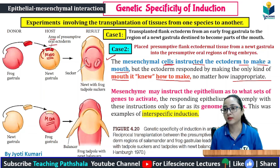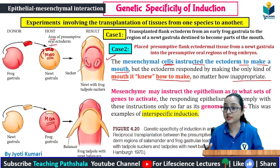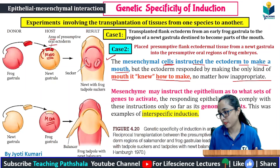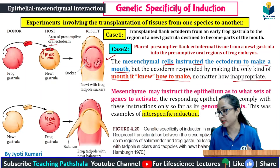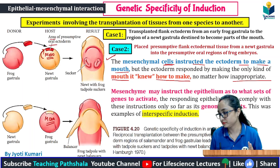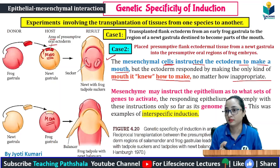The ectoderm says, 'Yes sir, I am making a mouth.' And when it started making the mouth, it used the genes that it already had. Where do those genes belong? They belong to the transplanted tissue — this is the instructive part. The transplanted tissue was already carrying its own genes.